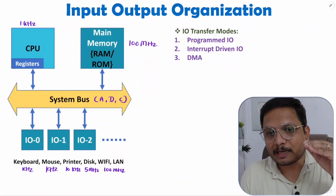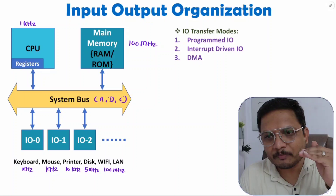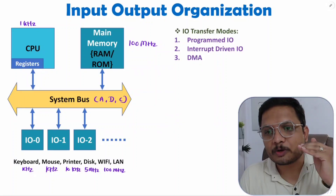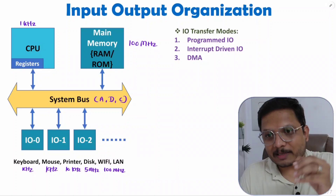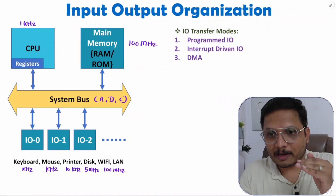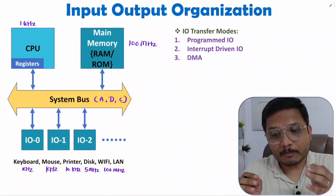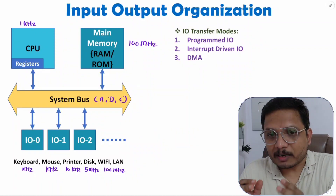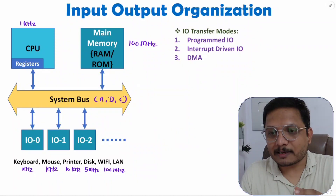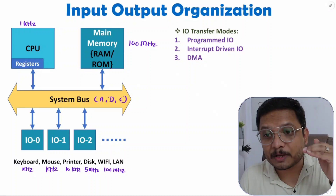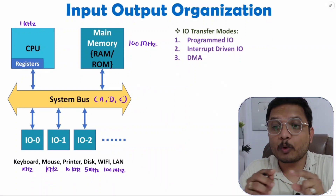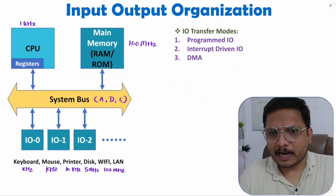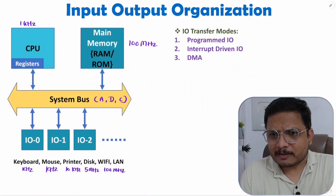When we interface IO devices with CPU, there are challenges in terms of manipulation of operations. When the CPU is accessing data from the keyboard, since the keyboard is very slow, the CPU should not wait for the data — once it gives a command to the keyboard, it should do other work, because the CPU is way faster. Similarly, when a disk is interfaced with CPU and the CPU is waiting for a response from the disk, your overall application will run very slow.